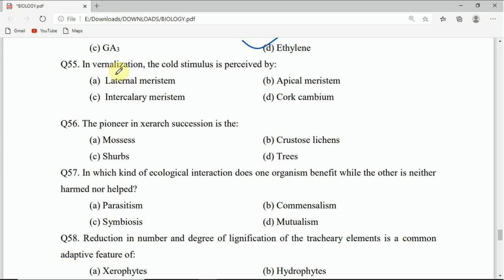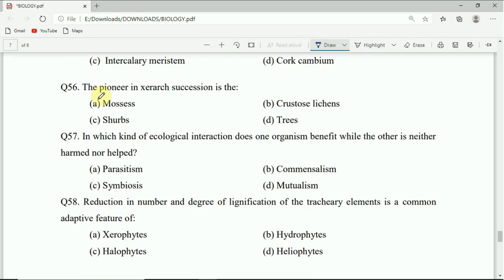Question 55: In vernalization, the cold stimulus is received by lateral meristem, apical meristem, intercalary meristem, or cork cambium. Correct answer will be apical meristem. Question 56: The pioneer in xerarch succession is the mosses, lichens, or other organisms.